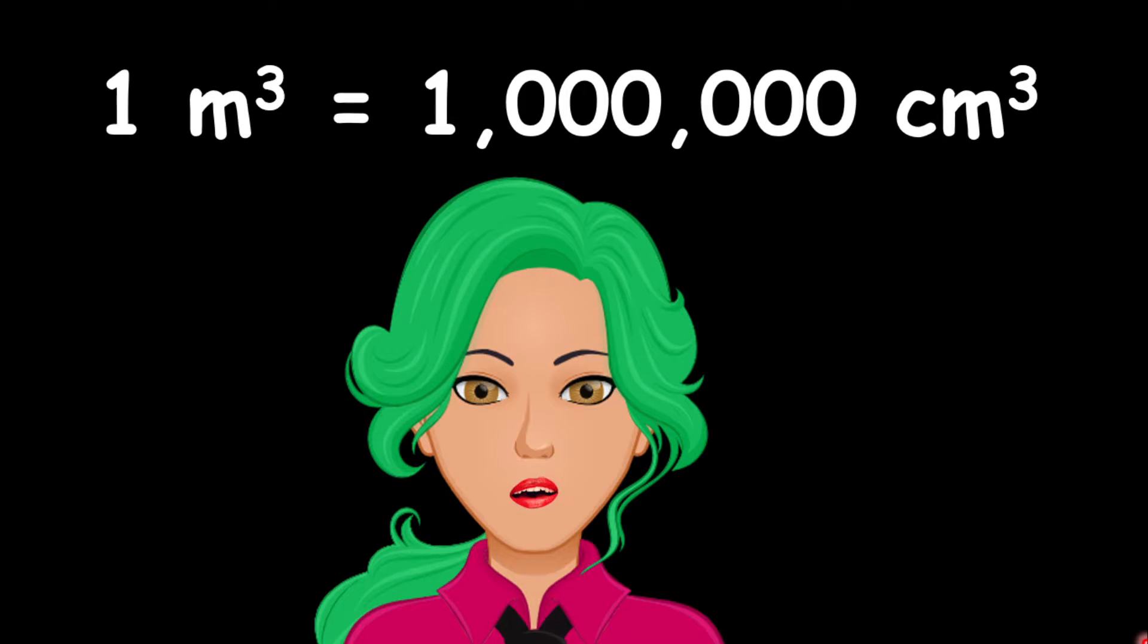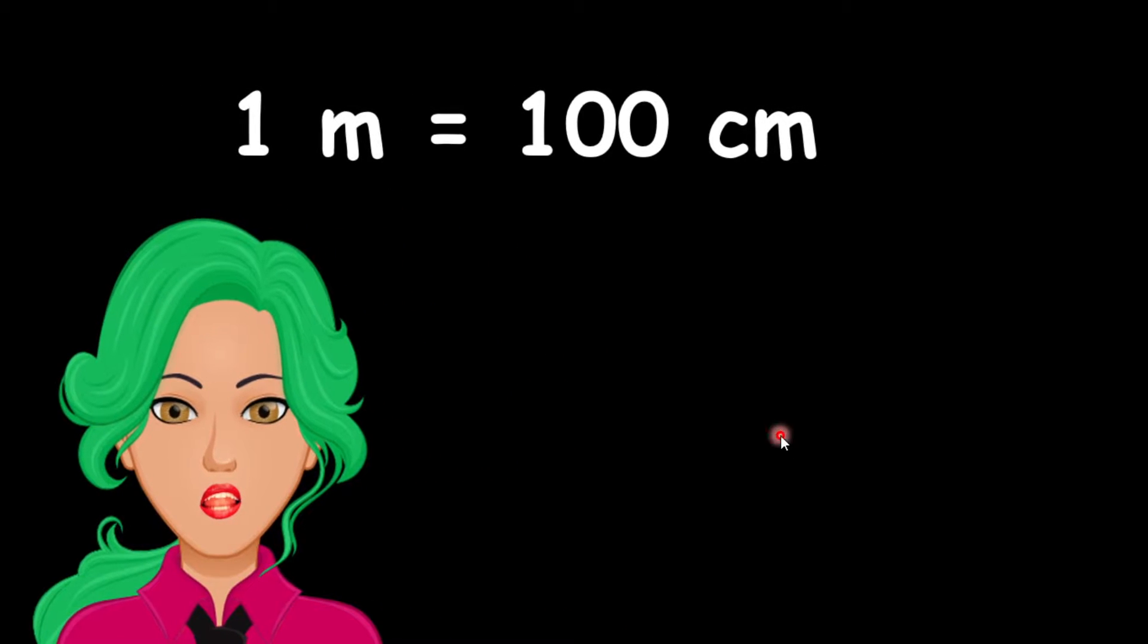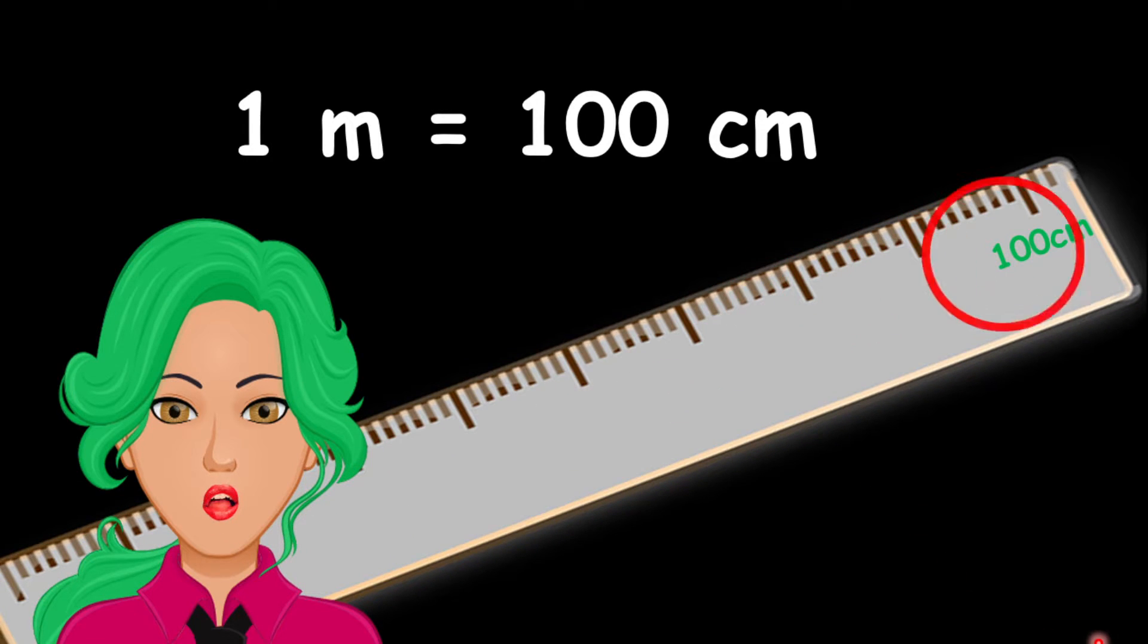Before we dive into this, the first thing you should remember is that one meter is equivalent to 100 centimeters. If you look at a meter rule or a yardstick, you will notice that there is a 100 centimeter mark at the end. Knowing that one meter is the same as 100 centimeters is very important to understand what we are about to do.